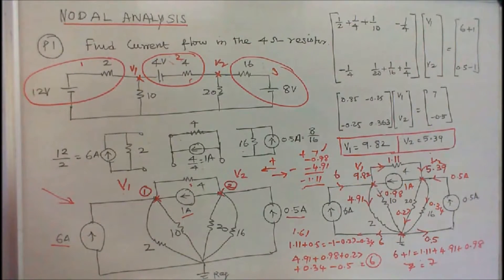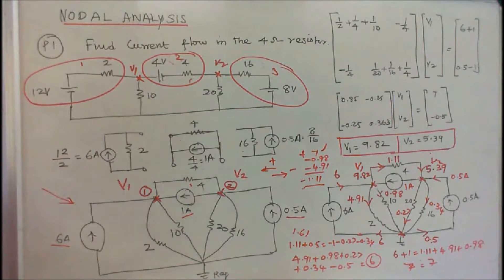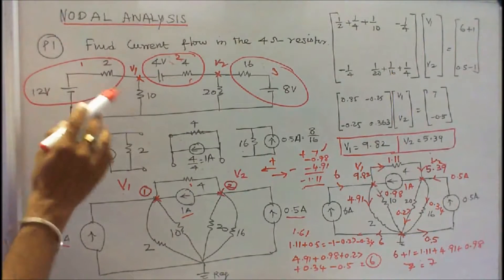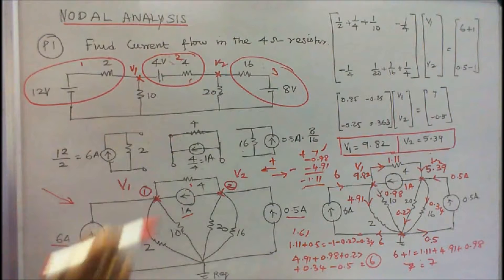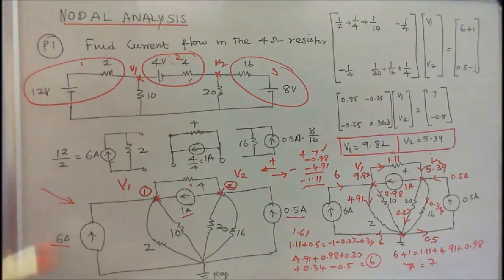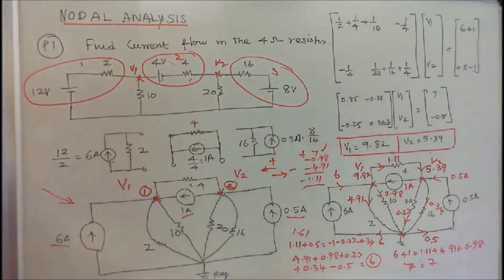Problem number one: find the current flow in the 4 ohm resistor. This is the given circuit. This circuit consists of five resistors: 2 ohms, 10 ohms, 4 ohms, 20 ohms, and 16 ohms. And three voltage sources: 12 volt, 4 volt, and 8 volt.